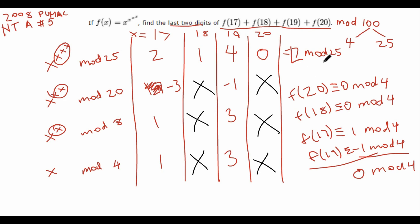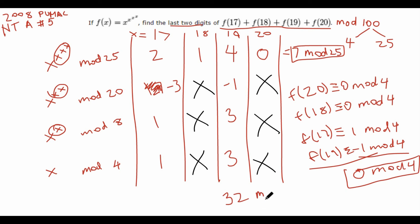Now we have f(17) + f(18) + f(19) + f(20) ≡ 0 mod 4 and ≡ 7 mod 25. Using the Chinese Remainder Theorem to find the value mod 100, the answer is 32 mod 100. We can confirm: 32 is 7 mod 25 and 32 is divisible by 4. Thus, the last two digits are 32.